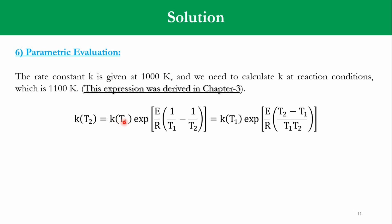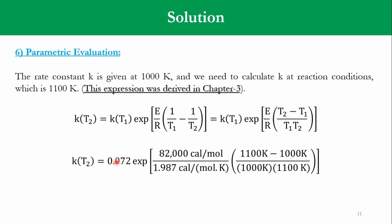Now, you can see that we know K at T1, which is 0.72. The value of activation energy is known, the R is ideal gas unit, T1 is 1000, T2 is 1100. So, accordingly, we can simply substitute the values over here. K at T1 is 0.72. The value of E is 82,000 Kelvin per mole. The value of R is 1.987 Kelvin per mole Kelvin. T2 is 1100, T1 is 1000, over T1 into T2, 1000 into 1100.